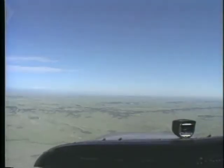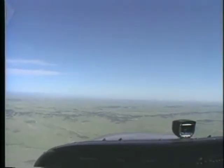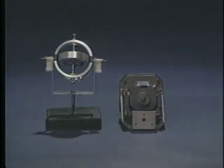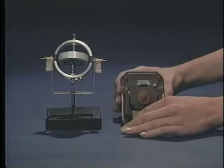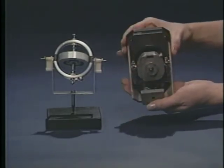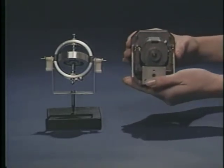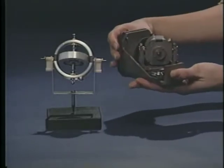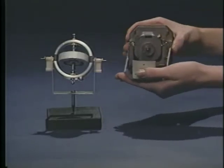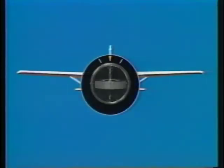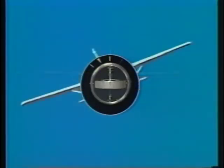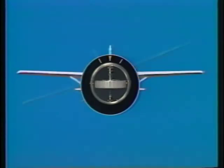Before we take a look at the information these instruments provide, you need to understand how they operate. The primary element of each gyroscopic instrument is a heavily constructed spinning gyro mounted in gimbals. If the gyro is freely or universally mounted, it will remain in a fixed position no matter where you move its base. This degree of stability is known as rigidity in space. If the gyro is mounted in an instrument so the airplane can rotate about it, the aircraft's movements will be displayed on the instrument face.